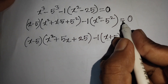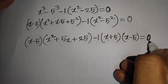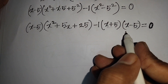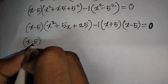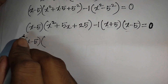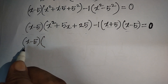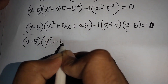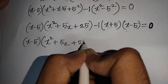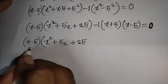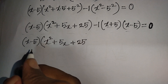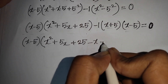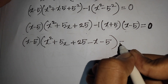We see that (x - 5) is common, so we take (x - 5) out. After cancelling (x - 5), we have x² + 5x + 25, and dividing the other term by (x - 5) gives minus 1 times (x + 5), which is minus x minus 5 inside the bracket, equal to 0.